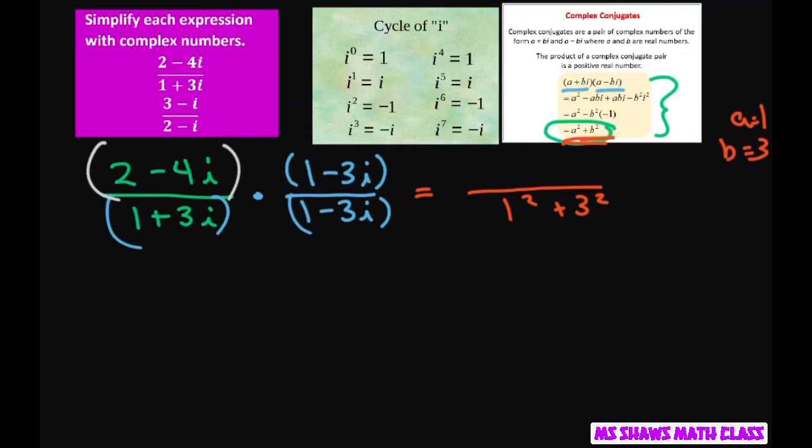And then for the numerator, it's going to be a lot harder, so we're going to have to FOIL this out or use the distributive property. So I'm going to get 2 minus 6i minus 4i plus 12i squared. Now let's simplify all this.